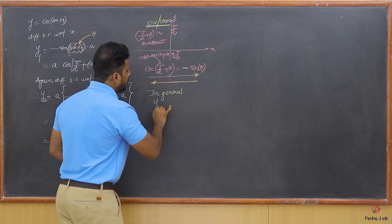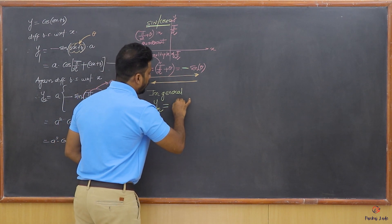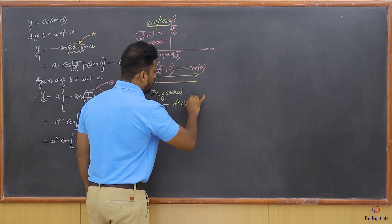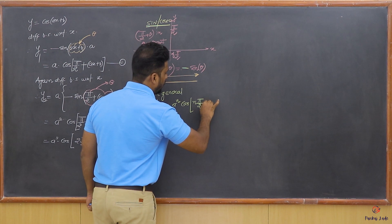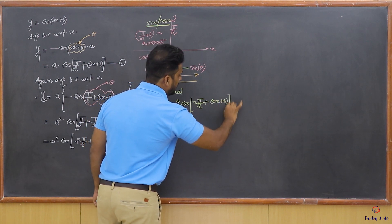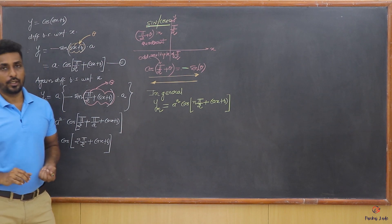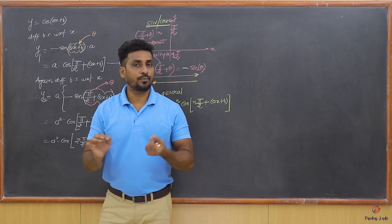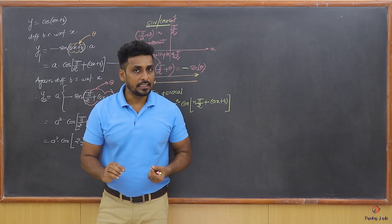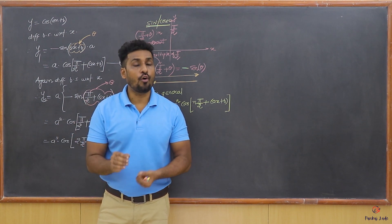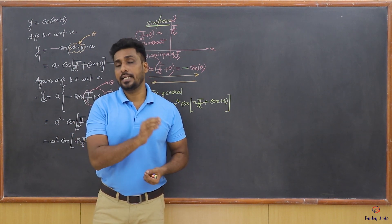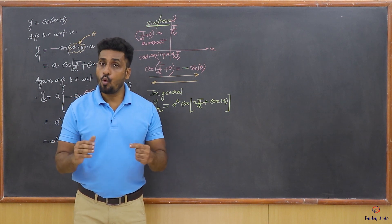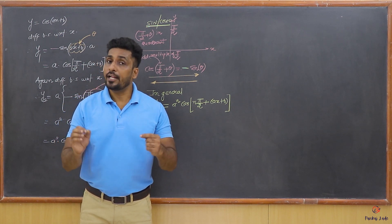Students, am I in a position to generalize for the nth derivative? Of course I am. In general, yn = aⁿ · cos(nπ/2 + ax + b). So in this derivation we have found the nth order derivative of y = cos(ax + b), and the formula is yn = aⁿ · cos(nπ/2 + ax + b). That was all about this derivation; now we are going to proceed ahead with some more important derivations for finding nth order derivatives.